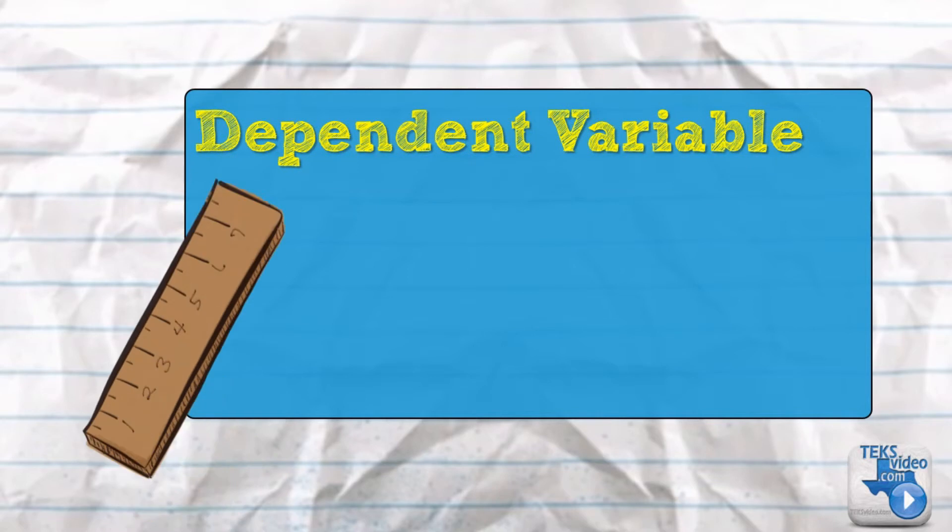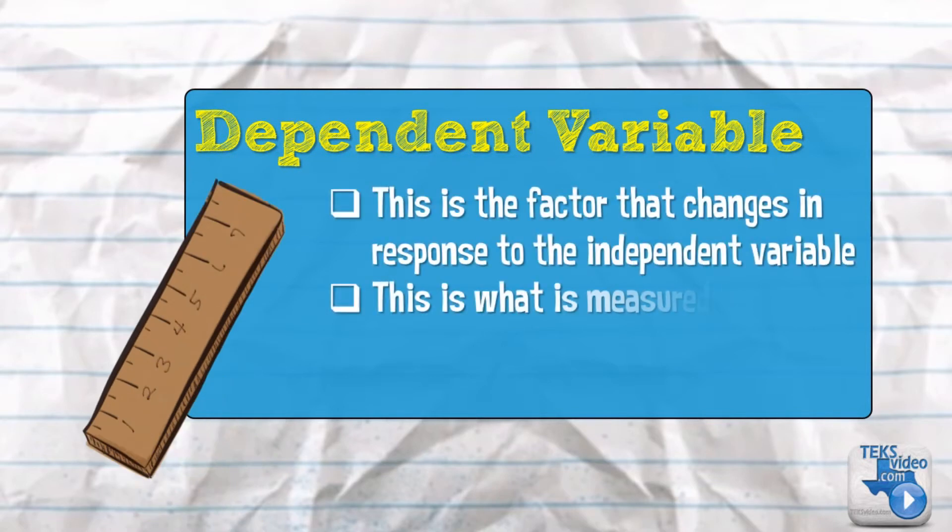A dependent variable is a factor that changes in response to the independent variable. This is what is measured in the experiment.